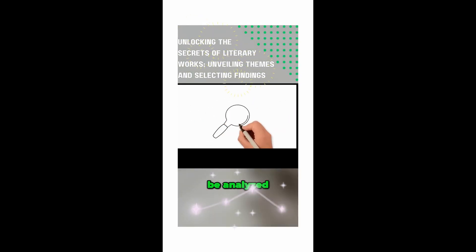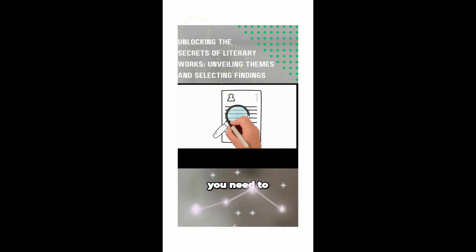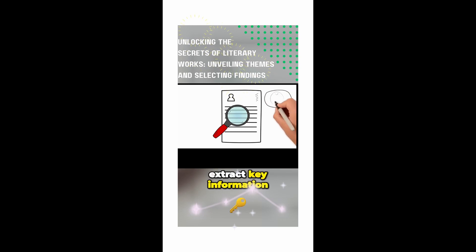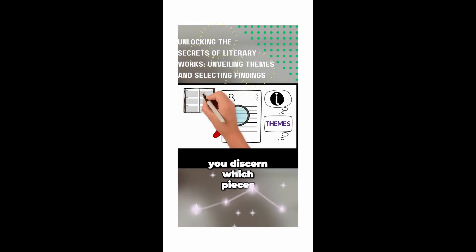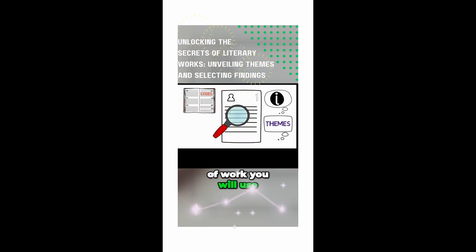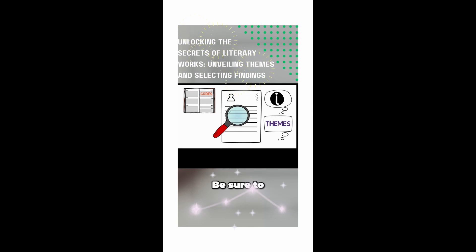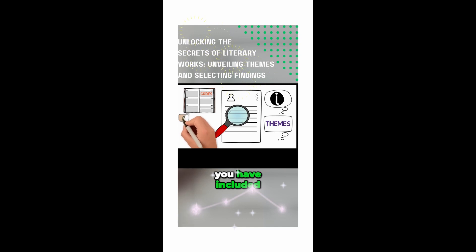Once you have identified the works that will be analyzed, you need to do a deep and thorough read to extract the key information and themes from each piece. A coding guide will help you discern which pieces of work you will use in your systematic literature review. Be sure to note why you have excluded a piece and how the ones you have included meet the selection criteria.